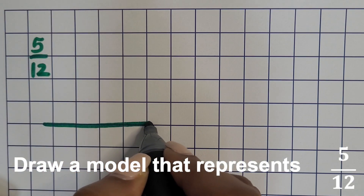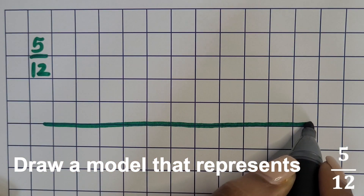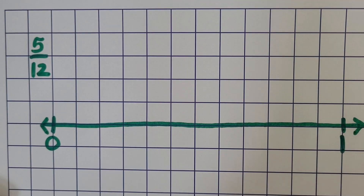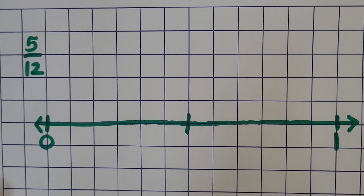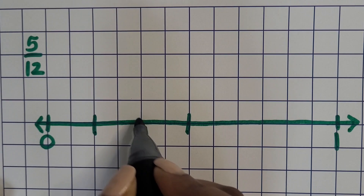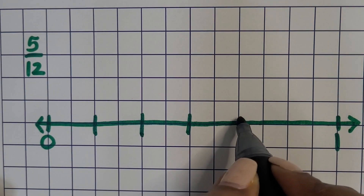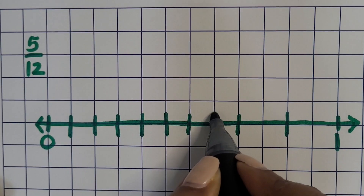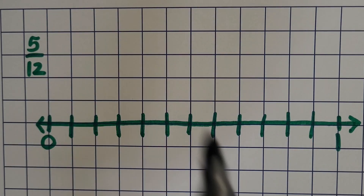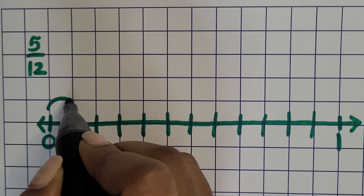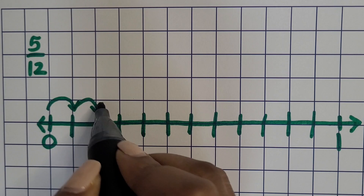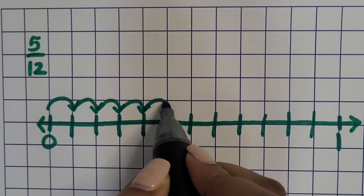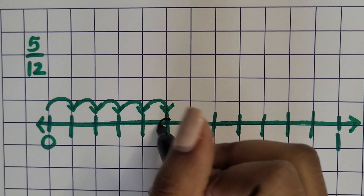Next, we'll represent five twelfths. Start with a line, create your endpoints — zero on the left, one on the right — and then make a tick mark right down the middle. Partition each half into thirds to create sixths: three on one side, three on the other, giving six equal parts. Now partition each sixth in half to create twelfths. Start at zero and draw an arrow to represent jumps — each jump is one twelfth — going all the way to five twelfths, then label that point.